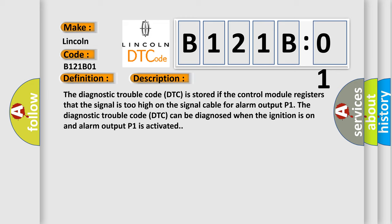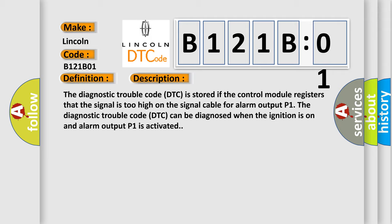The diagnostic trouble code DTC can be diagnosed when the ignition is on and alarm output P1 is activated. This diagnostic error occurs most often in these cases.